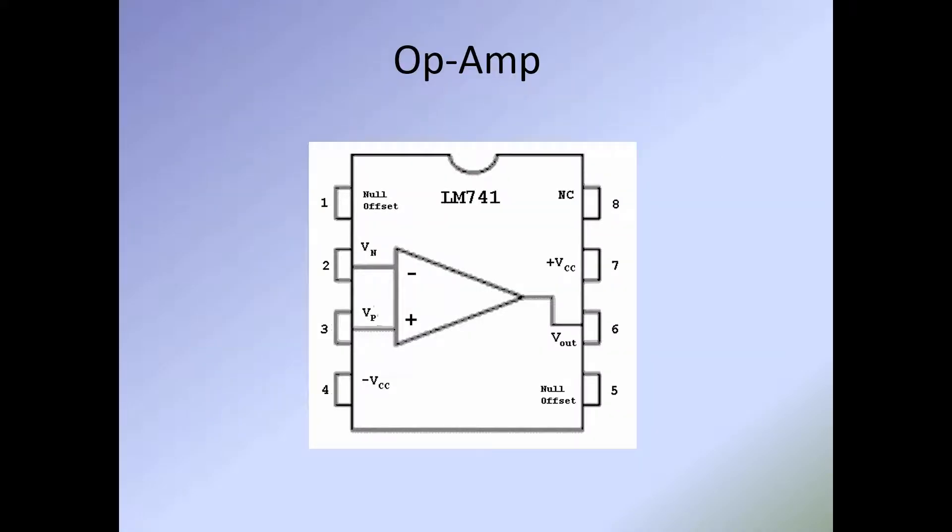Here is a blow-up of the block diagram of the internal function of the 741 op amp. On pin 1 and pin 5, you'll see what are referred to as null offsets. There is a configuration where we hook those up with a potentiometer so we can adjust the output and input so there is no differential between the negative and positive inputs. Basically, if we remember on the ideal op amp we wanted zero differential output, this is our way of getting as close as possible by adjusting the null offset.